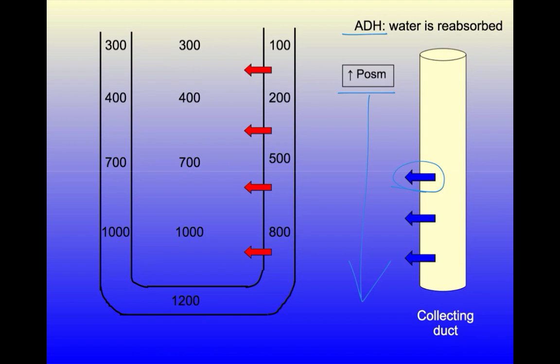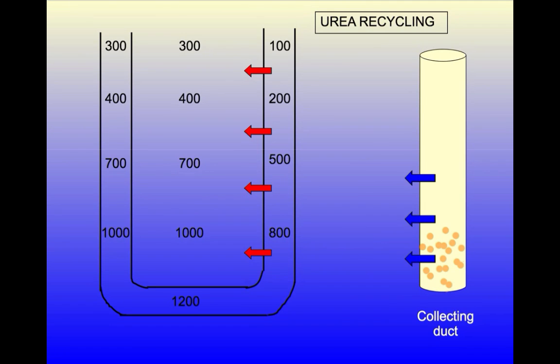One final aspect of the CCM mechanism is urea recycling. Urea is extensively reabsorbed from the collecting tubule because ADH also stimulates urea transport. Urea enters the interstitium and then diffuses back into the descending limb of Henle.